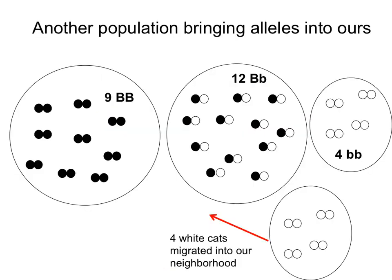Bringing it to our cat example: if four white cats migrate into our population, that increases the frequency of the white alleles. It doubles the proportion of the homozygous recessive in our population.